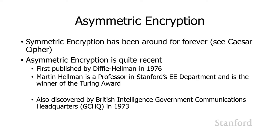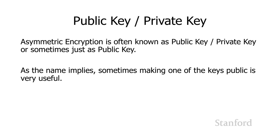It turns out asymmetric encryption was also discovered by British intelligence — the Government Communications Headquarters — in 1973, but they didn't publish the work. Asymmetric encryption is sometimes referred to as public key / private key encryption, or sometimes just simply as public key. Making one of the keys public is often very useful and will allow us to solve a bunch of the network security problems we discussed.